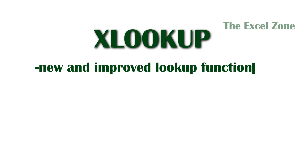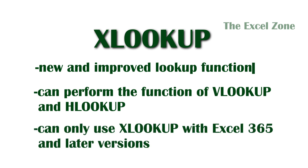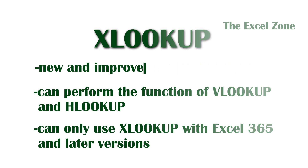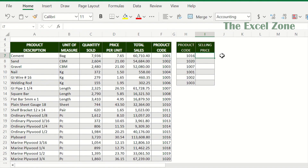Now let's move to the XLOOKUP function. XLOOKUP is a new and improved lookup function which can be used to search for a specific value in a table or range and then return a corresponding value based on a variety of search criteria. It can perform the function of both VLOOKUP and HLOOKUP. However, this is not available in earlier versions — you can only use XLOOKUP if you are on Excel or Office 365 and later versions. This is the syntax for the XLOOKUP function.